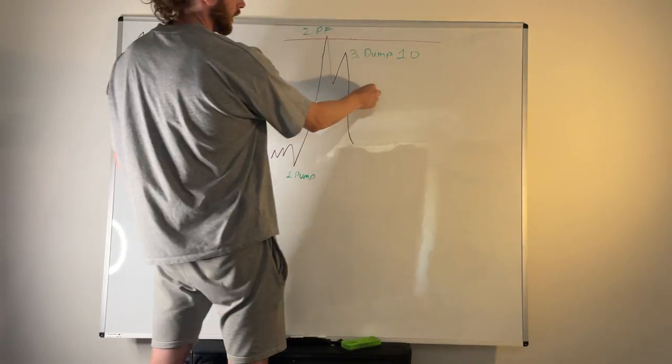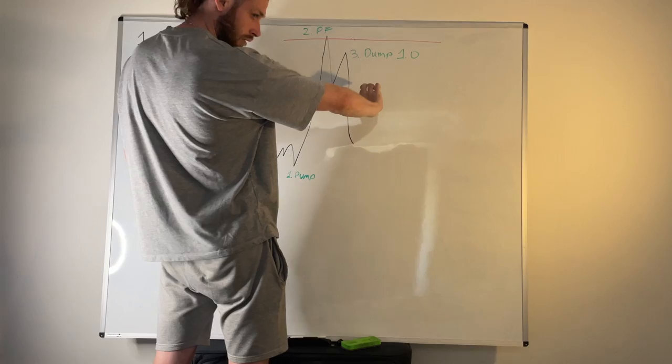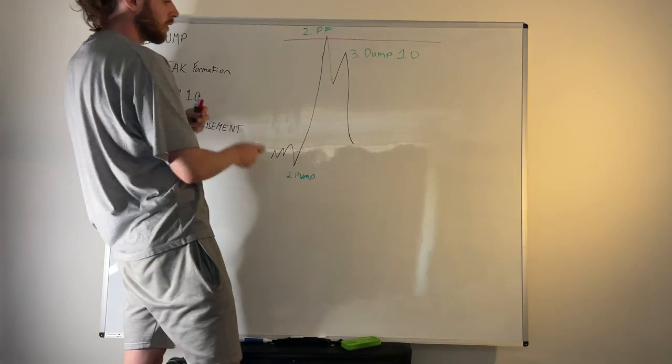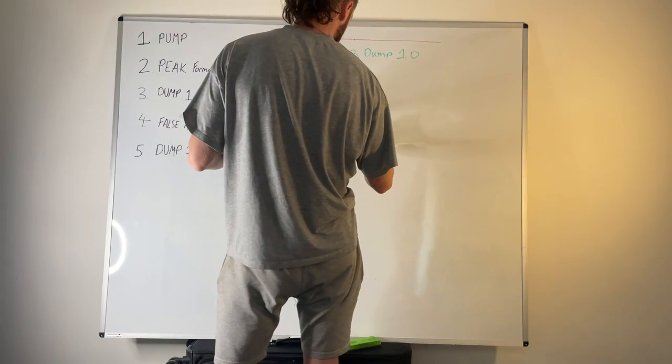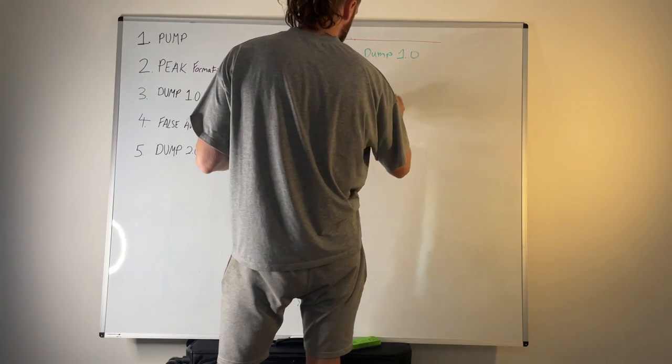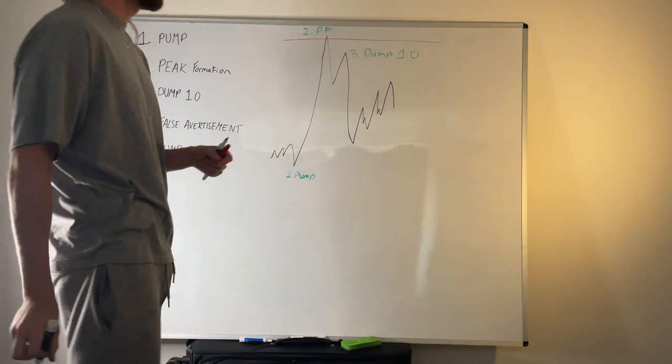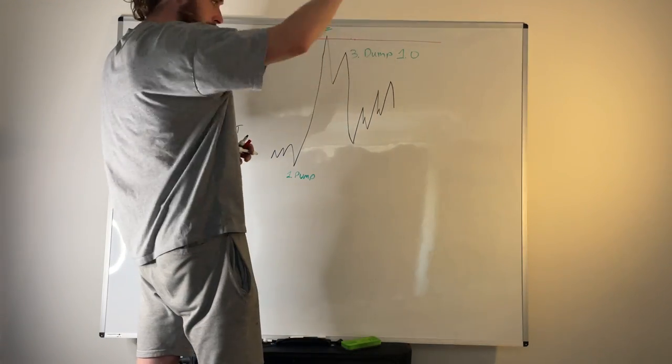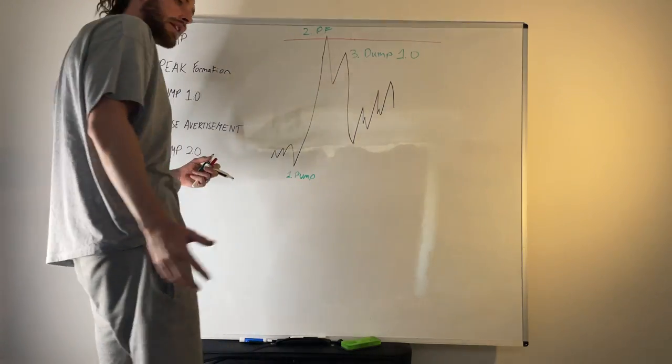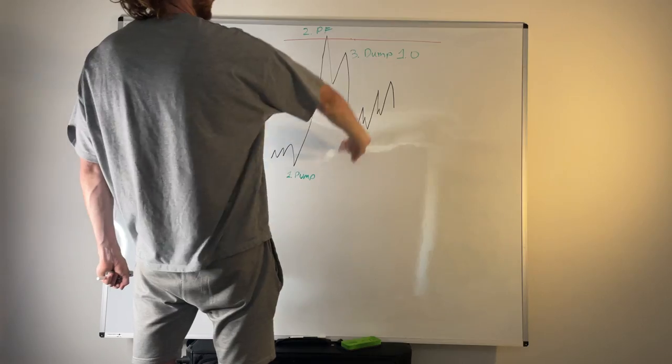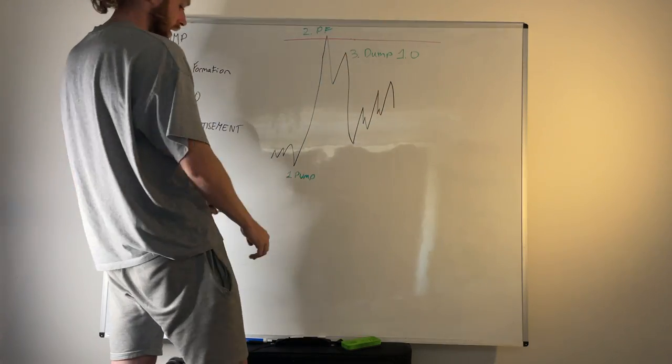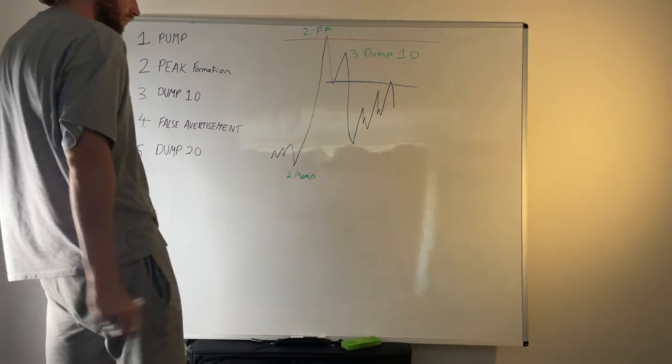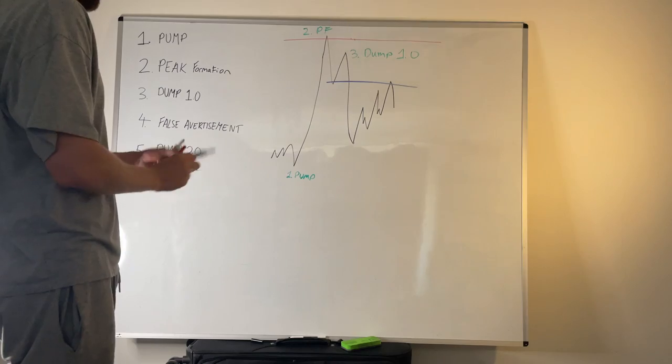When a stop loss is triggered, it doesn't just close the trade, it actually gets in the opposite direction. When you're in a buy and that gets taken out, that buy is then turned into a sell. They need buyers to move the market down. That's why stage four is false advertisement, and that will typically come in the form of the psychological rule of three. We might get three pushes up, three peaks, three sessions, three days.